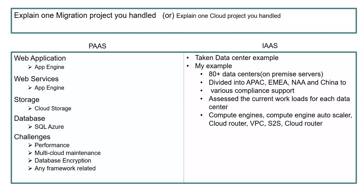Rather than maintaining for each country separately, we merged into one application. Several changes were required because every country had its own database — about 90 to 95 percent of the database was the same, but there were additional columns or stored procedures written for country-specific requirements. Those application-level changes had to be made. At the same time, we were saving a lot of money in maintenance — rather than maintaining 40 to 50 data centers in the European region, we reduced it to just one.